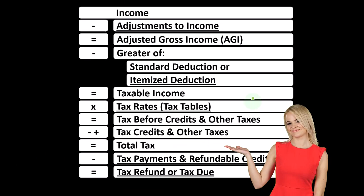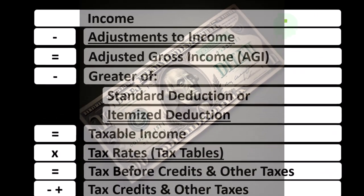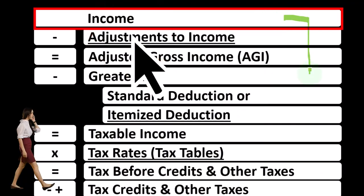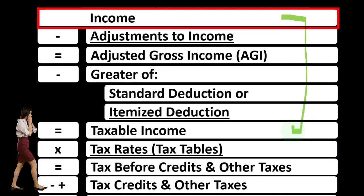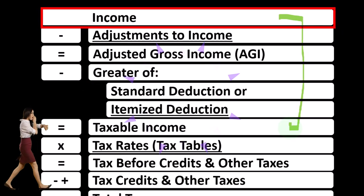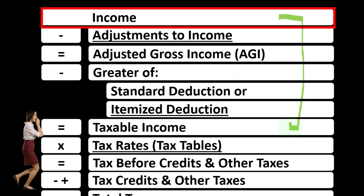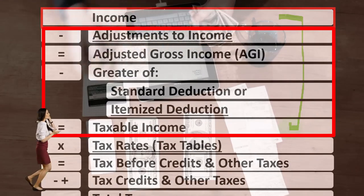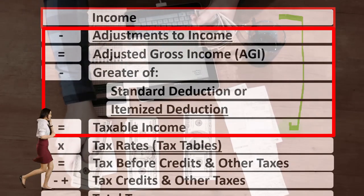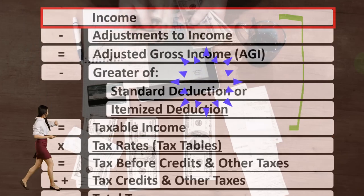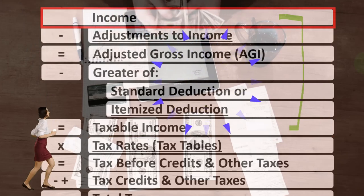Looking at the income tax formula, we're focused on line one, that being income. The first half of the income tax formula is, in essence, an income statement — just the scaffolding, just the outline — meaning other forms and schedules will be feeding into it. For example, the Schedule C is our point of major focus here.